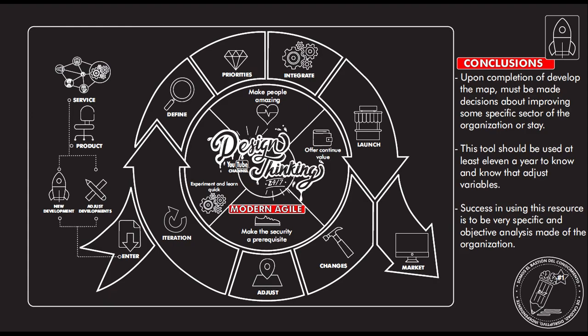At the end of this process, you can define which tasks you need to complete for your adjustment or improvement. This tool should be used at least once a year — it's very important because it will keep your development updated. The fact that you have something very good right now doesn't mean it will stay that way. Success requires a very specific and objective analysis made by the organization.